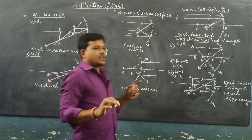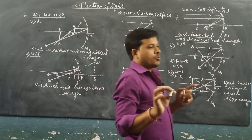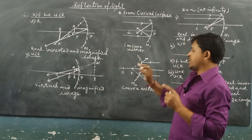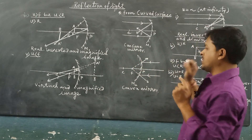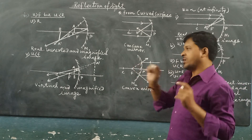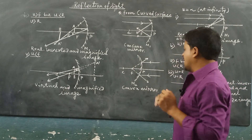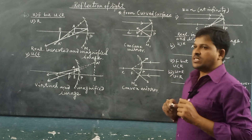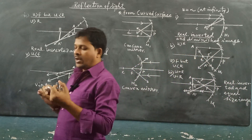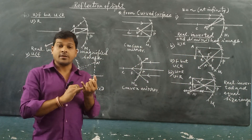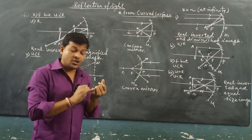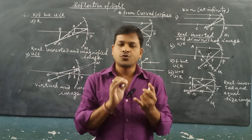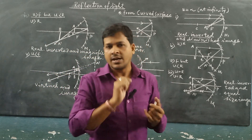These are the formations of image by using a concave mirror for the different positions of the object in front of it. The concave mirror is used in different purposes, like as a shaving mirror, dentist mirror, compact mirror, and it is also used in the headlight of a car.